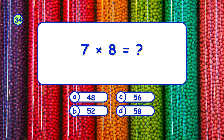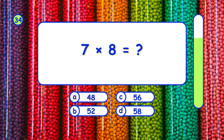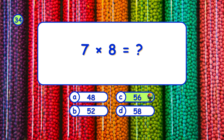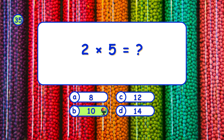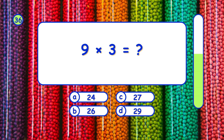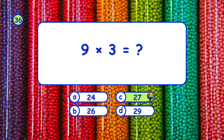What is 7 times 8? It's C, 56. What is 2 times 5? It's B, 10. What is 9 times 3? It's C, 27.